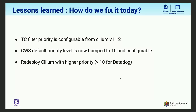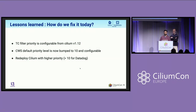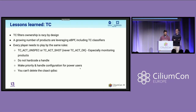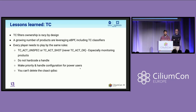How do we fix this issue today? As of Cilium 1.12, Cilium started supporting custom priorities for TC filters. CWS also rolled out an update that bumped the default priority from 1 to 10, so that people using Datadog Agent and Cilium together, things wouldn't break for them. If today you want to use both together, you'd have to redeploy Cilium with a priority greater than 10. What did we learn from this incident? TC filter ownership is very racy by design, and a growing number of products are leveraging eBPF these days, so this issue is only going to get worse without explicit coordination.